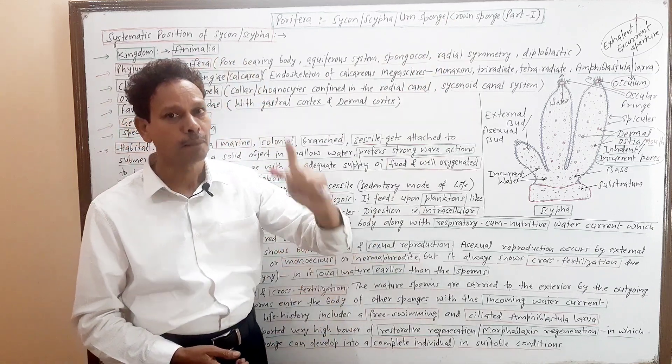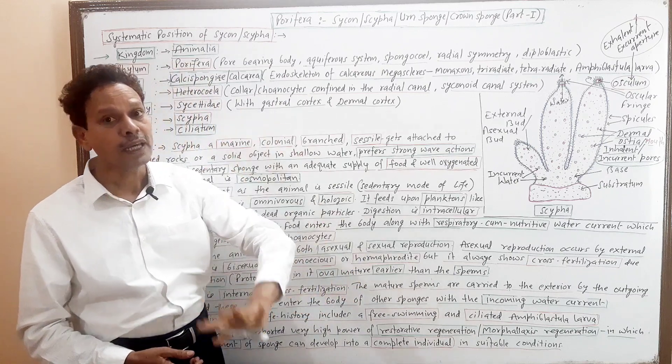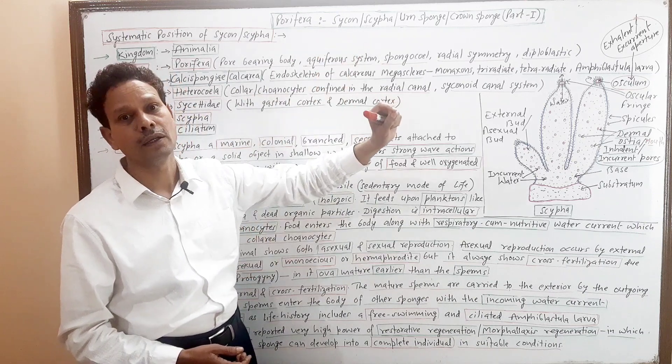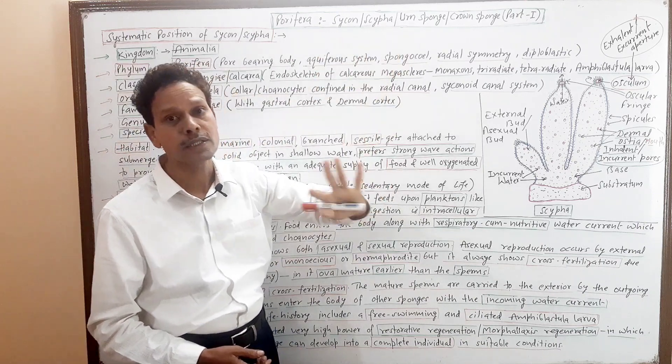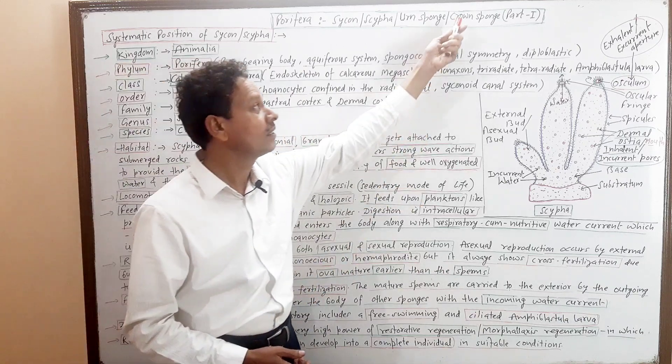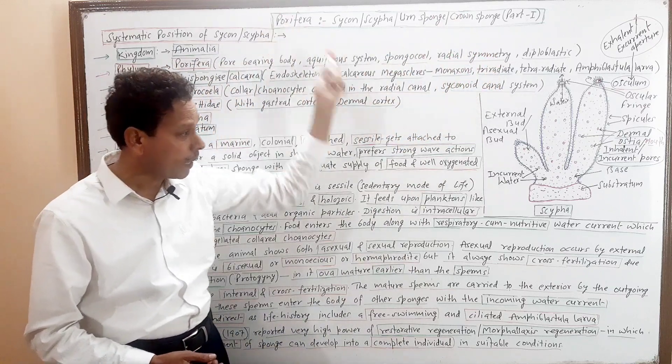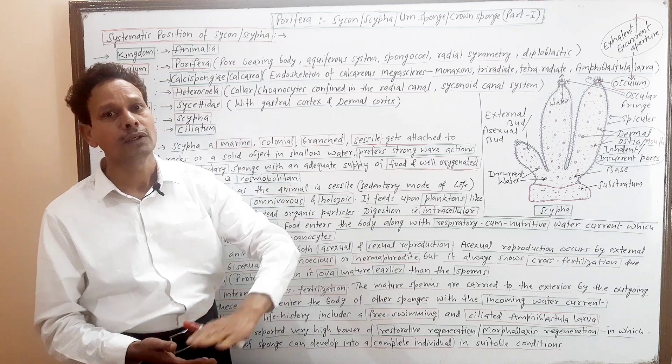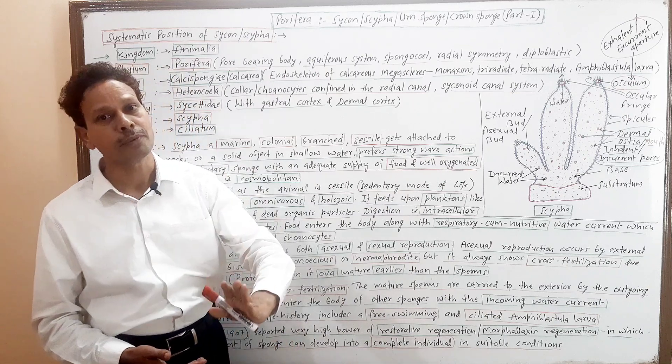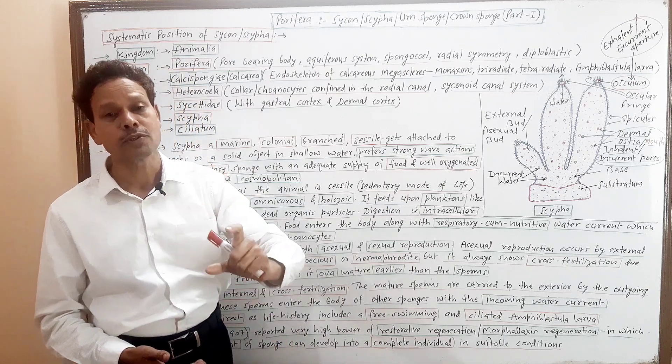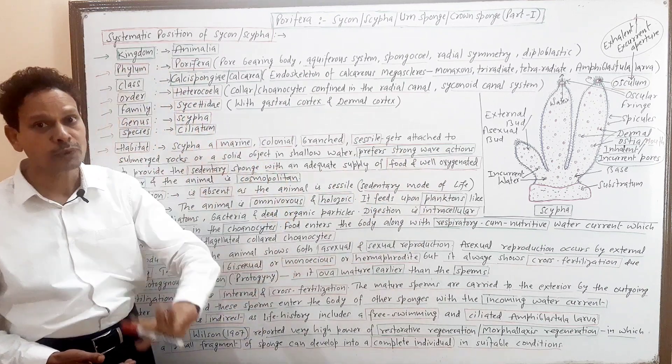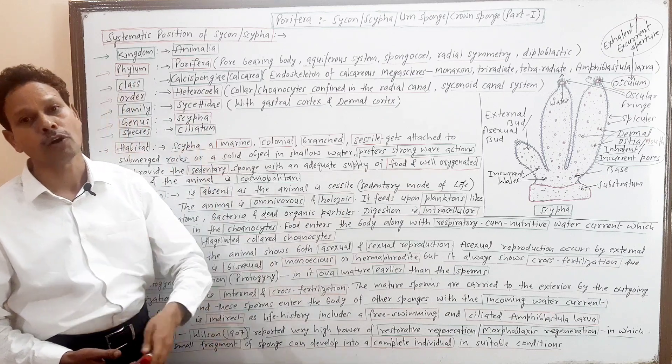Students, take notes carefully. BSC students, in the final exam questions will come, so remember the scientific name and everything. It is Sycon Scypha. We said it is urn sponge due to its vase-like shape, and crown sponge. All the notes we have made, their PDF file, we have uploaded in the video lecture description. All students should make notes in their notebook.